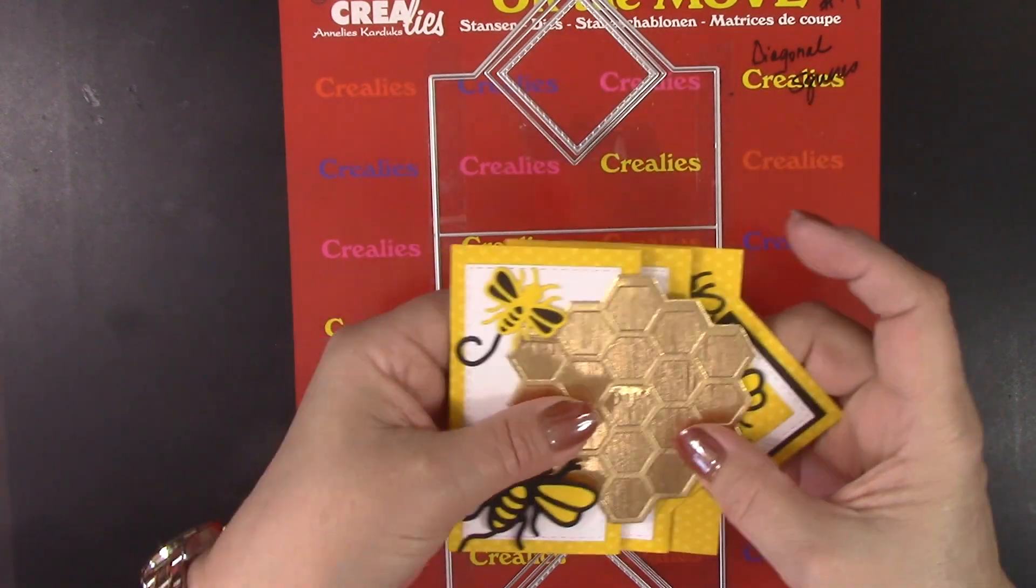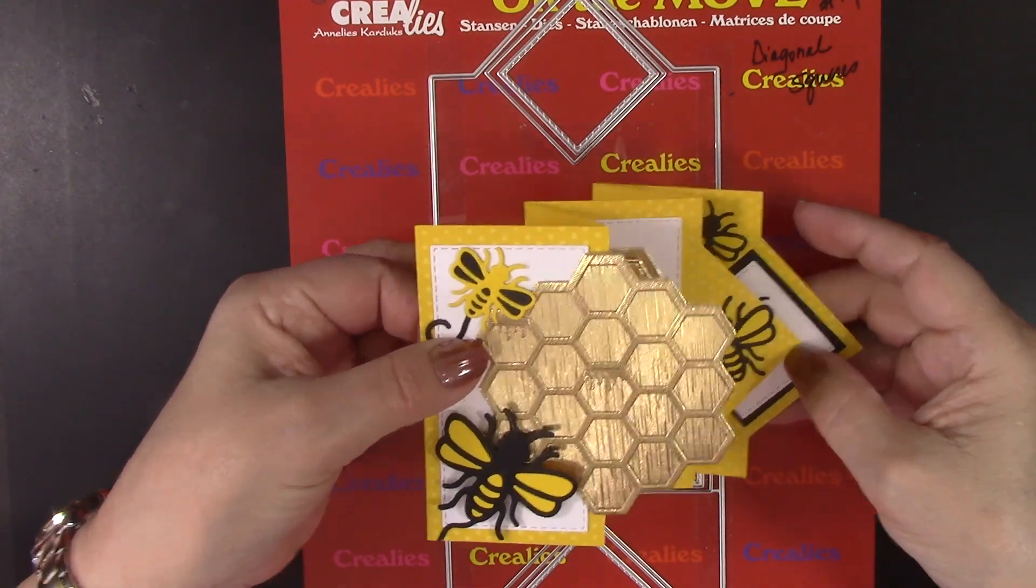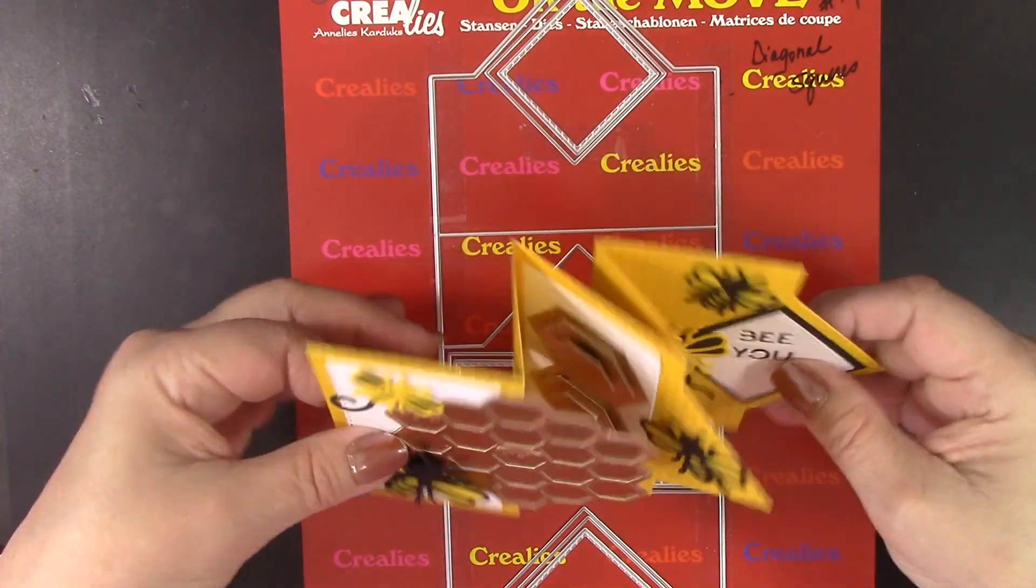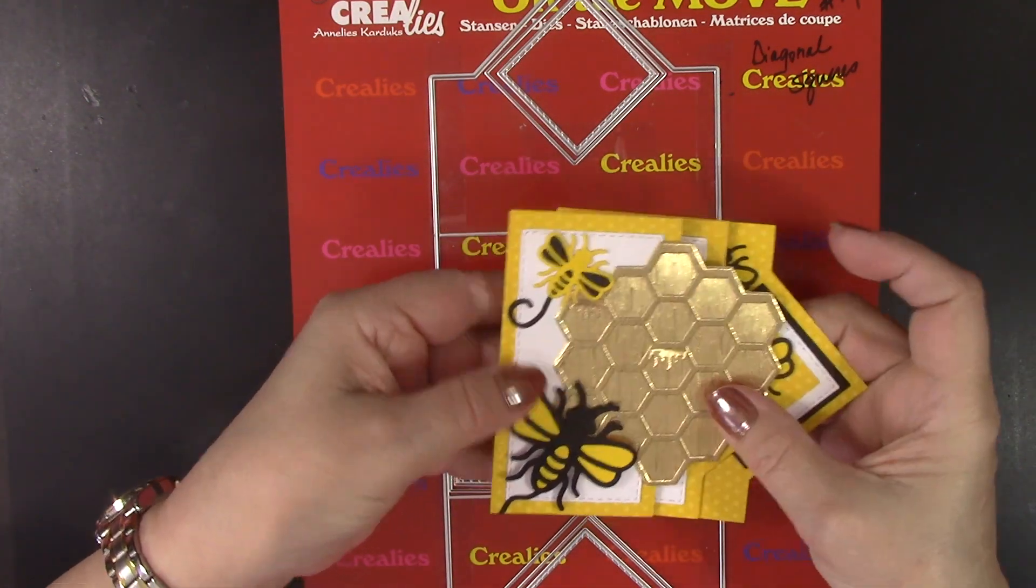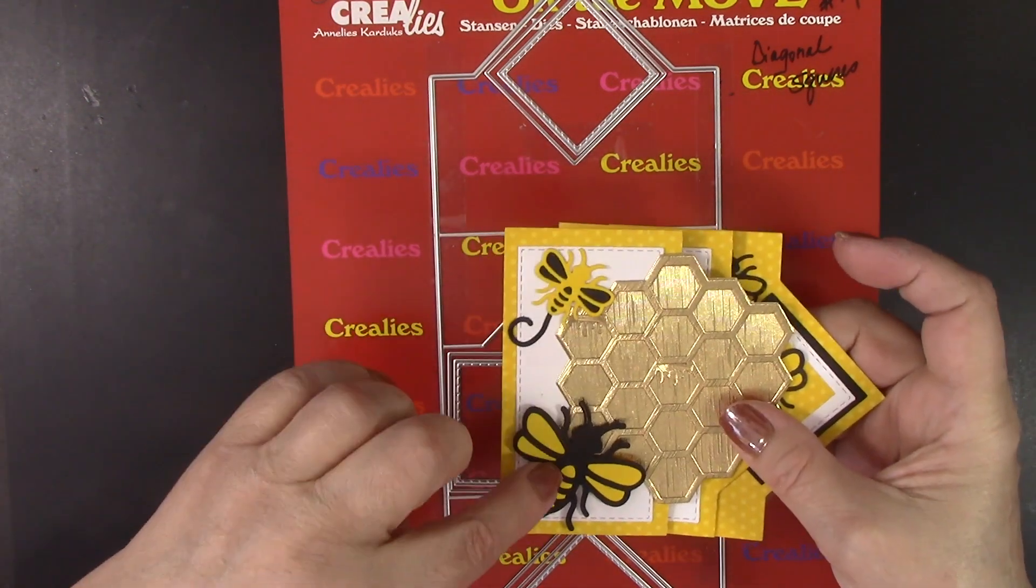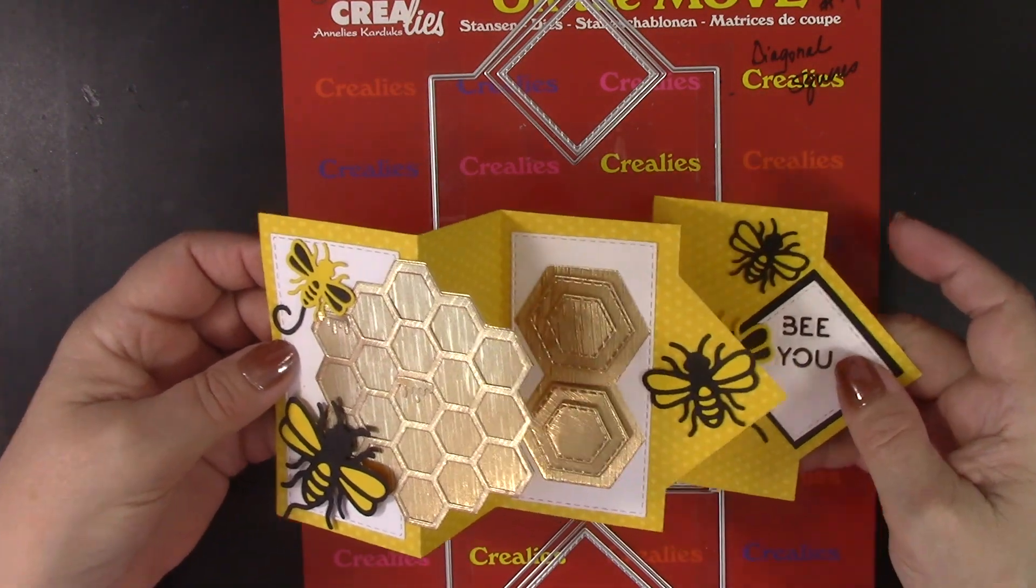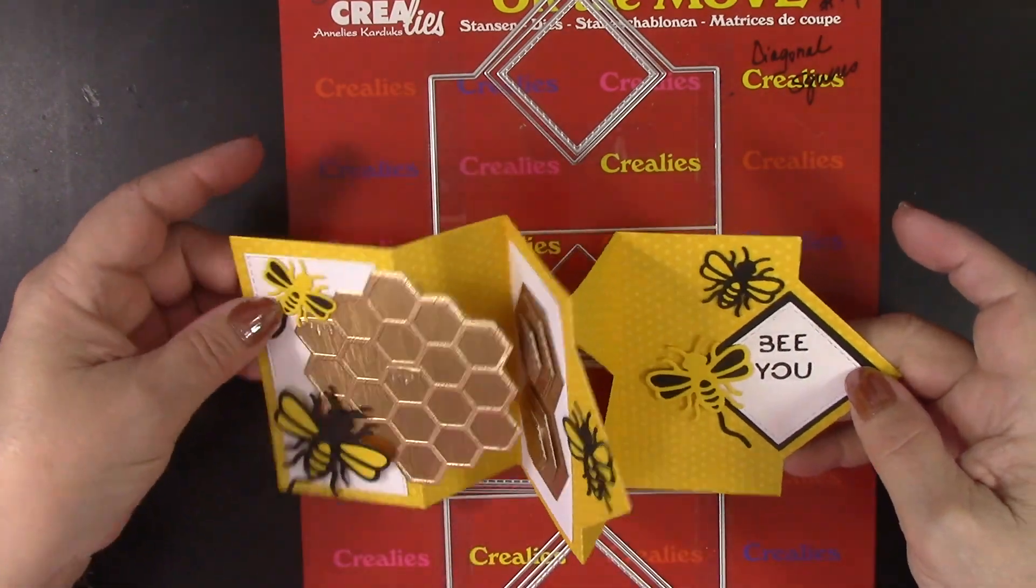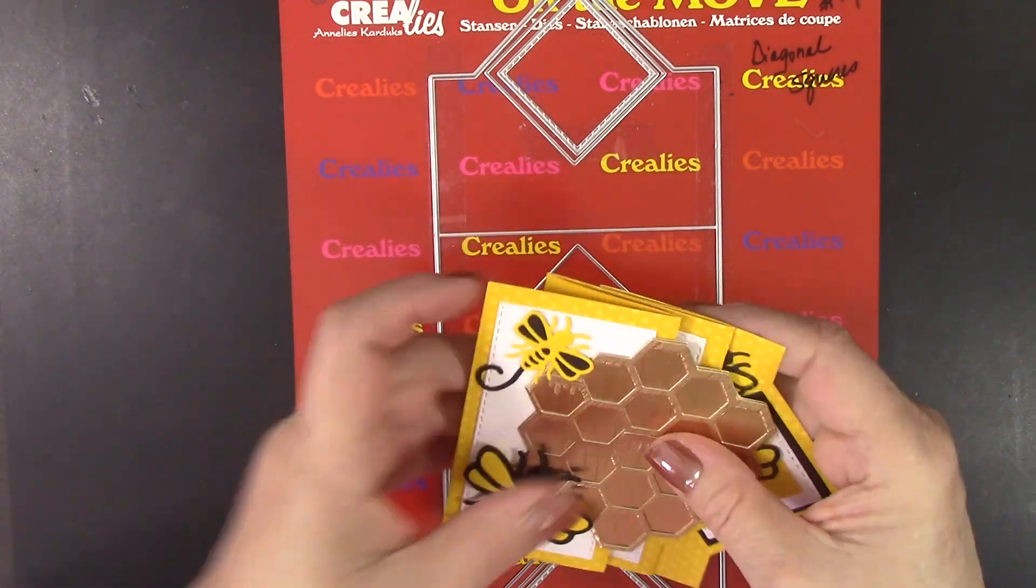So this is the Diagonal Squares, and I have created a super cute bee and honeycomb card that stands up on its own and lays flat to mail. We have some new cute bees and several honeycomb dies and then Bee You. So I love how that card turned out.